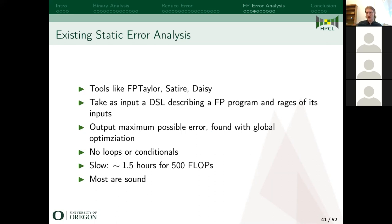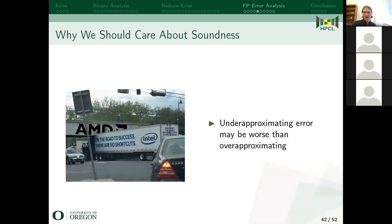There are a couple of drawbacks. First, these tools do not currently support loops or conditionals — you're writing straight-line code. More fundamentally, it's slow: it takes about an hour and a half to analyze code containing 500 floating point ops. Soundness is a key goal throughout. If you under-approximate the error, that can be much worse than over-approximating. For example: if your truck is 11 feet 8.25 inches and you under-approximate it to 11 feet 8, you might hit a bridge that is actually 11 feet 8. Whereas if you over-approximate to 11 feet 9, you might just waste a little gas. In cases with highly asymmetric cost functions — like making sure planes don't collide — soundness is critical.